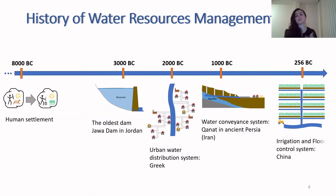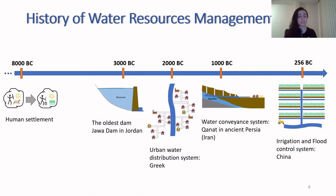People also learned how to divert water from rivers to irrigate their farms and how to control floods. One of the oldest irrigation and flood control systems is found in China, around 256 BC, and it is still working nowadays. So you can see that the history of water resources management is not separated from the history of human civilization — it is somehow entangled with it.